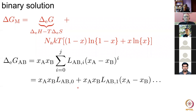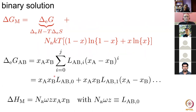Expanding to i=0 and i=1: the first term — xA·xB times a constant — you will recognise as the regular solution term, so L_AB^0 can be identified with the regular solution constant. The additional i=1 term is included because the first term alone may not adequately represent the variation of excess free energy with concentration. You can add more terms to this polynomial.